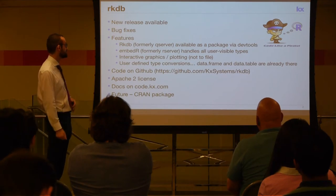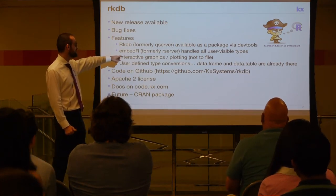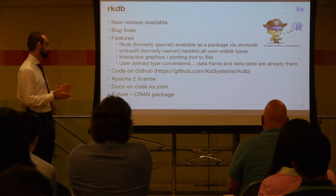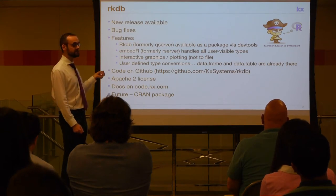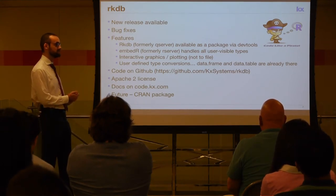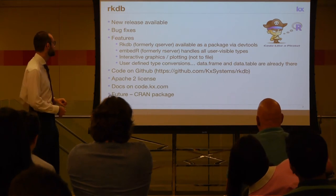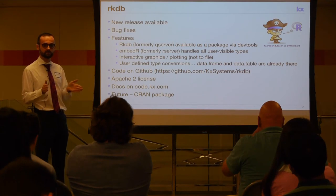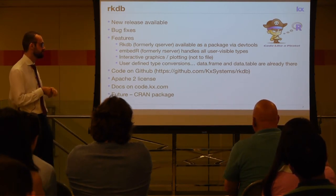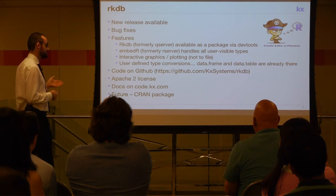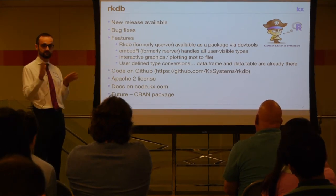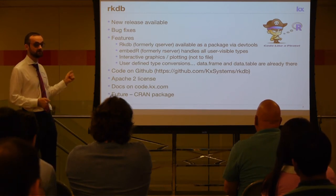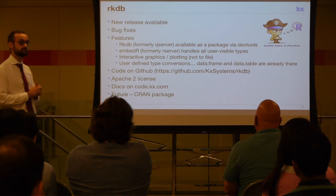We also have Embed R, which is the formerly R Server — we just wanted to make it a bit clearer which one was which. There's obviously bidirectional support, and we've now added interactive graphics and plotting, with even better interactive graphics and plotting to show you later tonight. We've added all the different data type conversions in, since before we had a restricted list of supported data types. The code is available on GitHub under KX Systems, Apache 2 license, and documentation is available on code.kx.com.